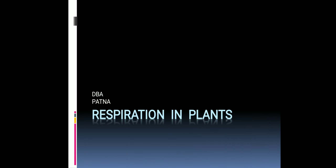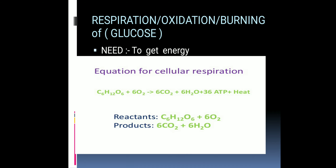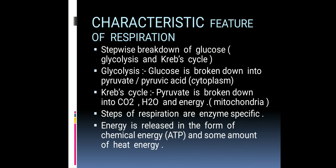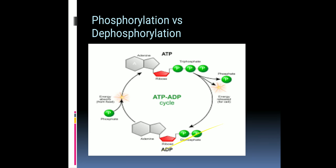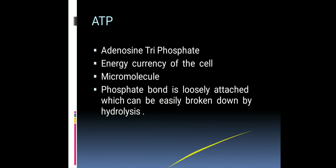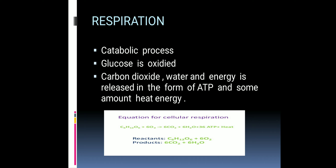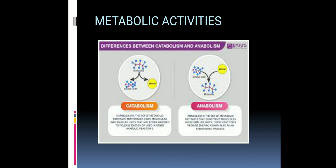Good morning students. In the previous class we had started with respiration in plants. We had seen the need of respiration, cellular respiration and its equation, the reactants and products of respiration, characteristic features of respiration, phosphorylation versus dephosphorylation, ATP, and respiration's definition. Today we have to start with metabolic activities.